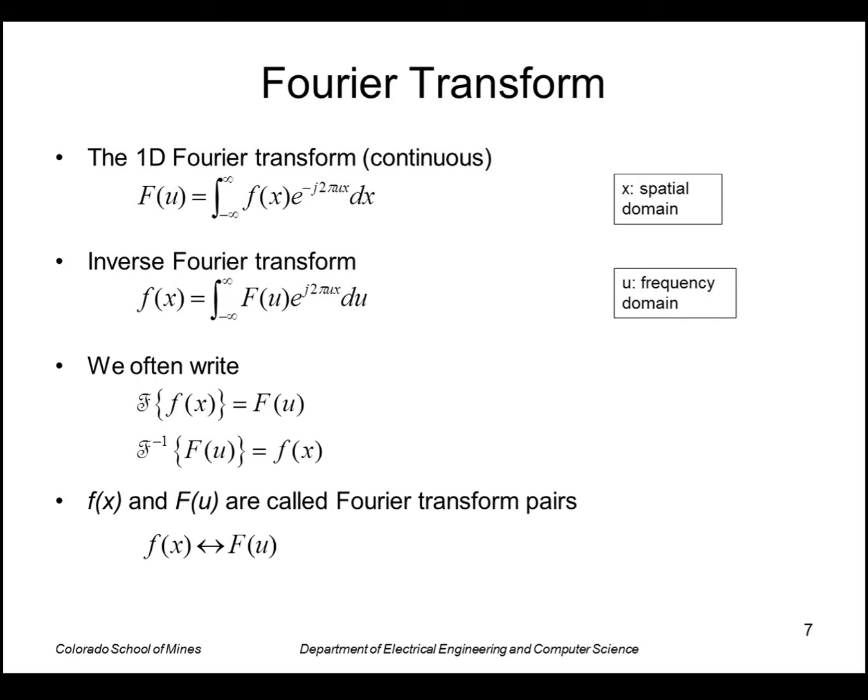We often write a script F to mean the Fourier transform operation here. So if we apply the Fourier transform to small f of x, we get capital F of u. Or if we take the inverse transform to capital F, we get small f. So these two functions are called Fourier transform pairs. If you know one, you can recover the other.